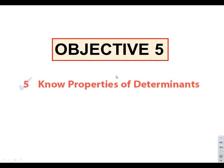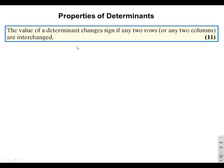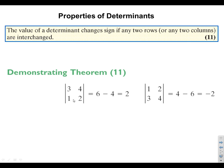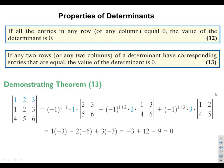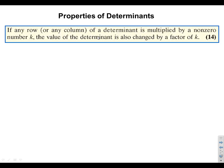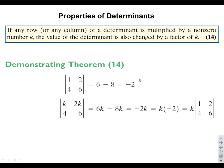A couple properties to know: the value of a determinant changes sign if any two rows swap. So if you have 3, 4 on top and 1, 2 below with determinant 2, swapping gives determinant negative 2. If you have all zeros in a row, the determinant is 0. If any two rows have corresponding identical entries, the determinant is also 0. If any row or column is multiplied by a non-zero number k, the determinant is also multiplied by k — so you can pull that k out front.